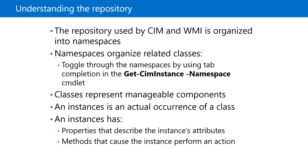When we work with the repository, we typically work with instances. An instance is an actual occurrence of a class. For example, if our computer has two processor sockets, we will have two instances of the class representing the processor. But if our computer doesn't have an attached tape drive, there will be zero instances of the tape drive class.